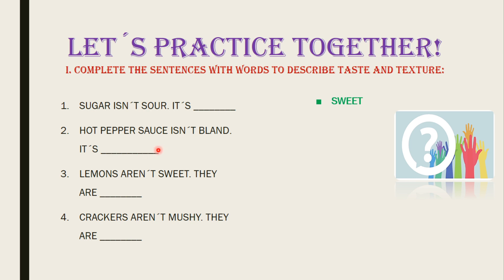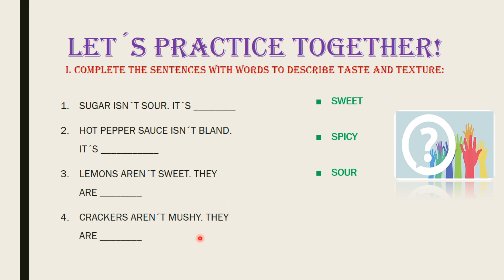What about number two? Hot pepper sauce isn't bland. It is... Spicy. Hot pepper sauce is spicy. Number three: Lemons aren't sweet. They are... Sour. Very good. Number four: Crackers aren't mushy. They are... Crunchy.